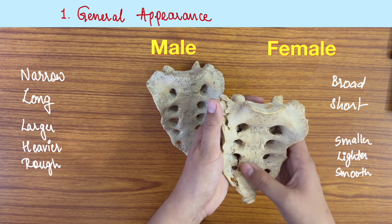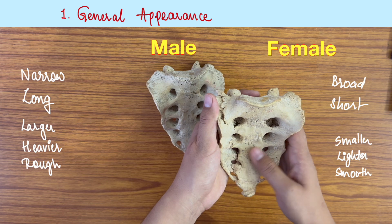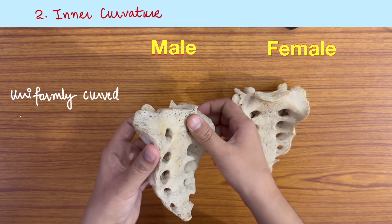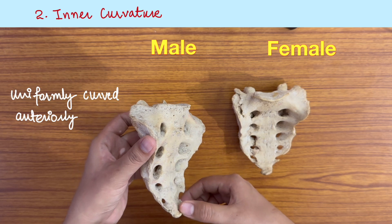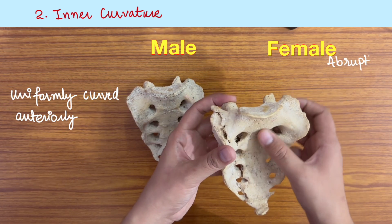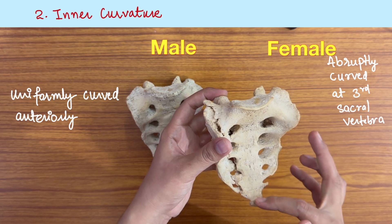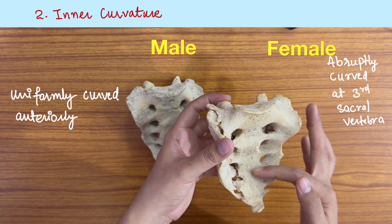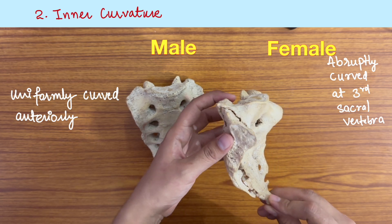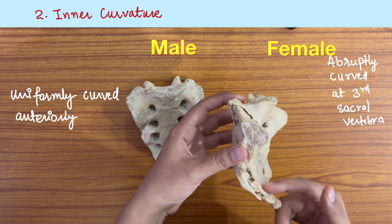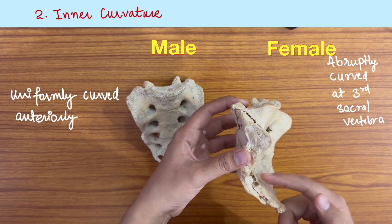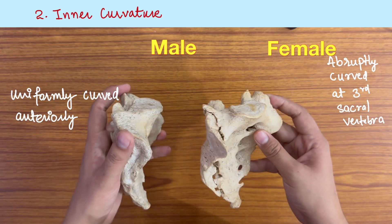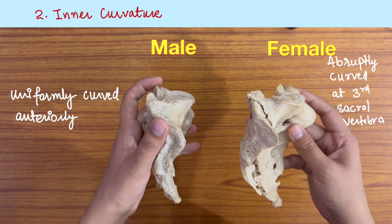The female sacrum is smooth because the muscular markings are less prominent. The inner curvature of the male is uniformly curved anteriorly, but in the female it is abruptly curved at the third sacral vertebra. So at S1, S2, and S3, you can see it is abruptly curved from the third sacral vertebra, as compared to the male being uniformly curved — this is more clearly visible from the side.